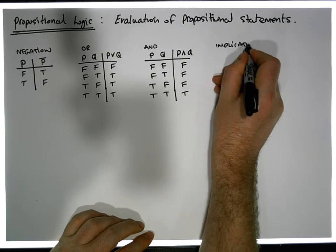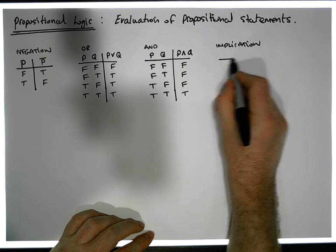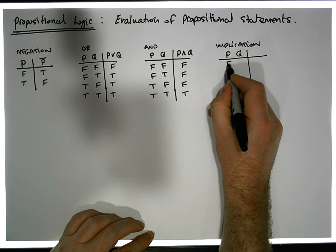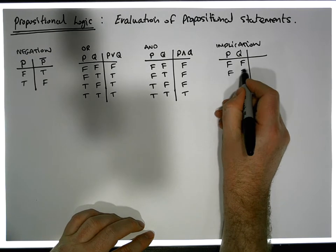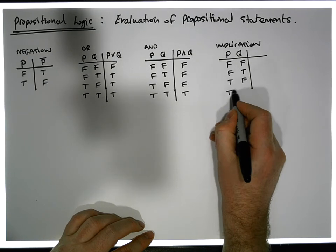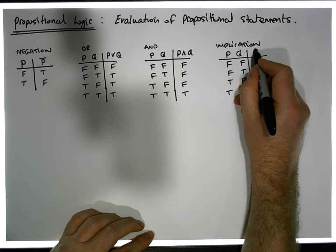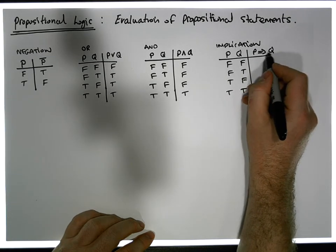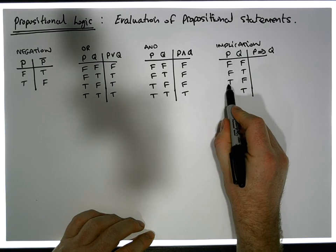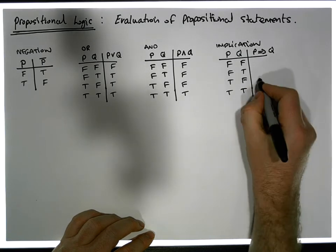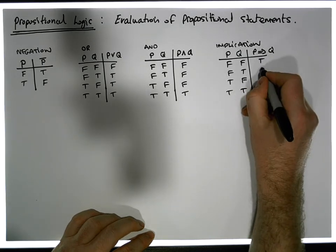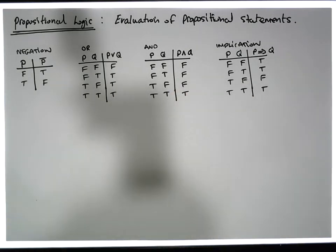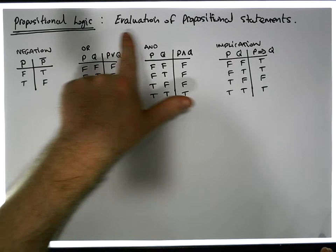Finally we have implication. Implication is also binary — it takes two inputs, a premise P and a conclusion Q. P implies Q is only ever false when the premise is true and the conclusion is false. Everywhere else it's true. Those are our four key connectives that we'll use to evaluate particular propositions.